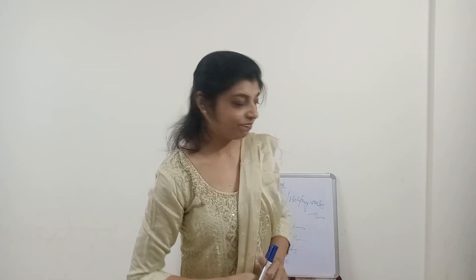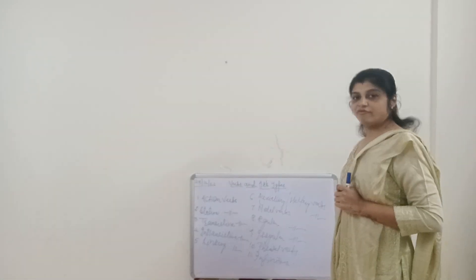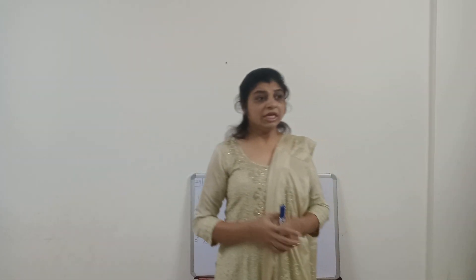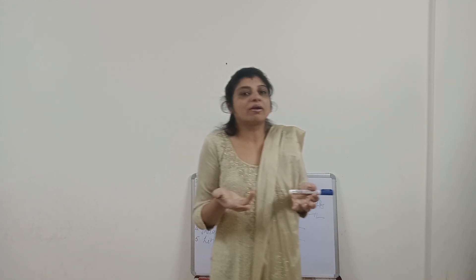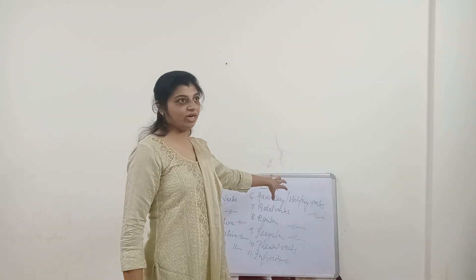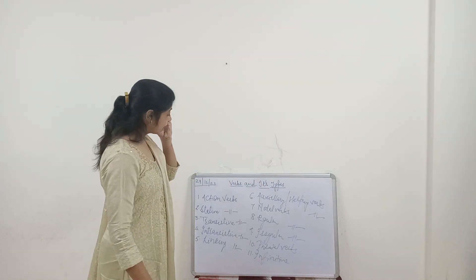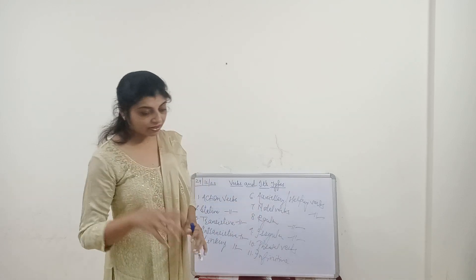Modal verbs are a special subgroup of auxiliary verbs. Here you express possibility or permission rather than certainty. Examples include: can, may, might. For example: 'May I come in?' — asking for permission. 'You might have done it' — expressing uncertainty. When you are not sure, that comes under modal verbs, which is why modal verbs are a subgroup of auxiliary or helping verbs.